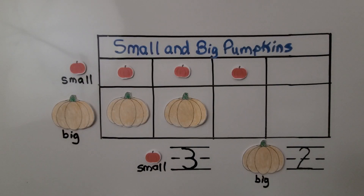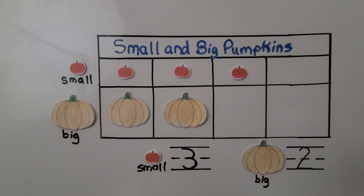So we can sort objects into categories by color, by size, or by shape and put them into a graph. Our next lesson, 12.5, we're going to read a graph.